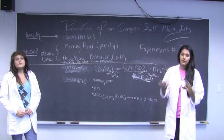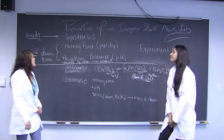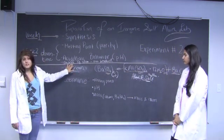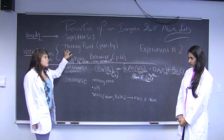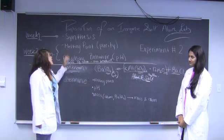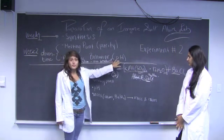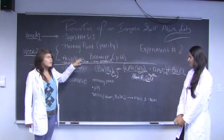In this lab, we'll be going through several steps to get to our final product. In week two, we're going to take the mass of our alum that we created in week one and test its chemical properties. We're going to test its melting point to determine its purity, and we're also going to test its pH by dissolving the alum in water and determining its acid or base behavior.